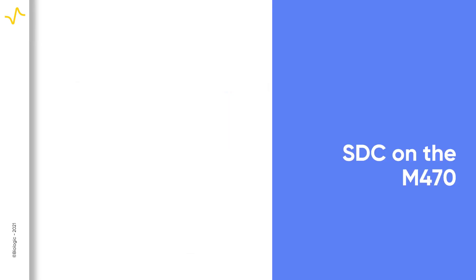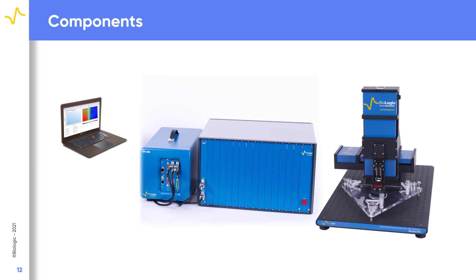How is SDC implemented on the M470 through the SDS 470 module? The components of an SDS 470 system are shown. A control PC is used to run the M470 software which interfaces with the equipment to set up and run the SDC experiment.